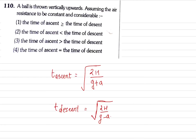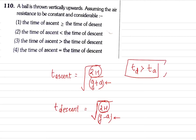If you compare, 2h is constant. The numerator with denominator: the denominator is bigger in one case — it will be (g + something) and (g - something). So here the denominator is smaller for descent, so we can directly say time of descent is greater than time of ascent. This is already covered in your classes also.